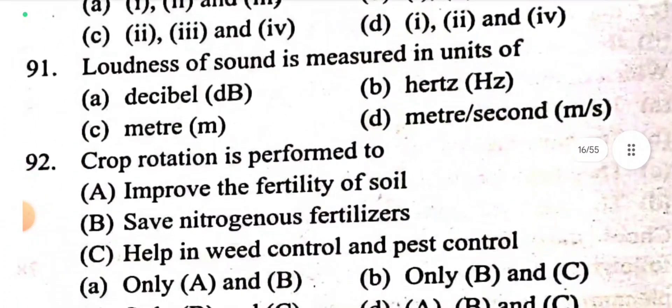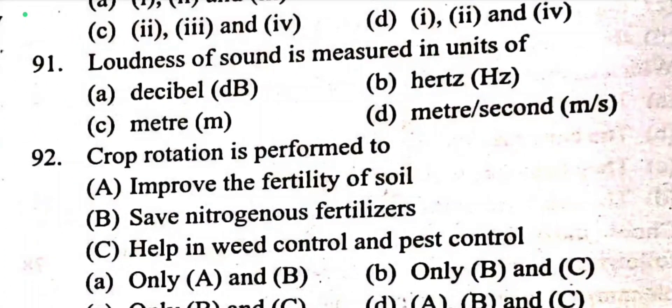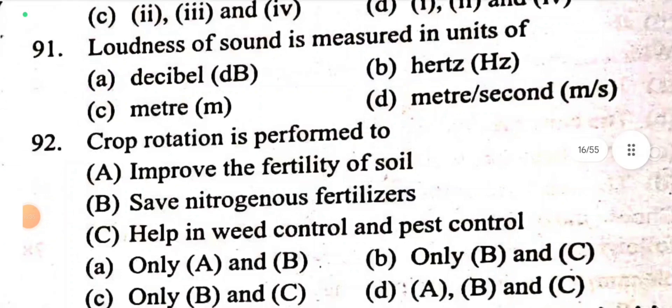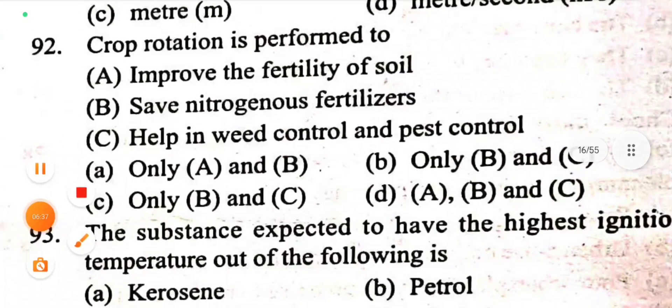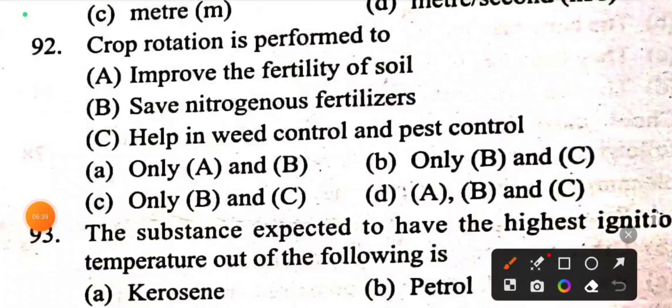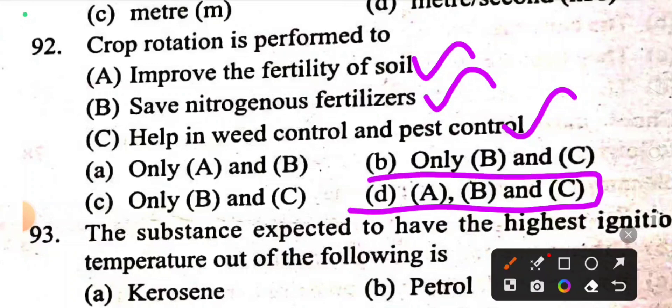Question 91: Loudness of a sound is measured in units of decibel. Question 92: Crop rotation is performed to improve soil fertility, save nitrogenous fertilizers, help in weed control and pest control. All of the above, options A, B, and C.